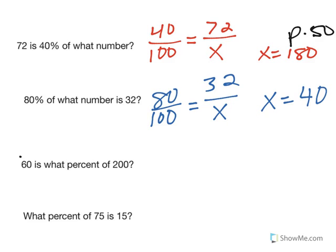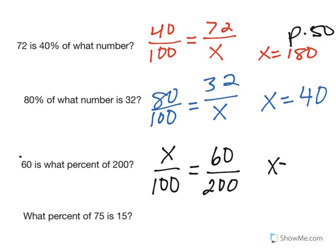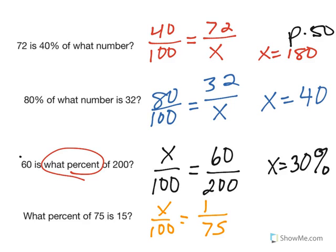And the third one, 60 is what percent of 200? So x over 100 equals 60 over 200. You'll also notice I always put my percents on the left. When I cross multiply here, I get x equals 30. But it's not just a number, right? Remember, we are trying to find the percent. So our answer should be 30%. And yes, it does matter. And in the last one, what percent of 75 is 15? So x over 100, 15 goes on the top. Cross multiply, x is 20. And once again, we're finding a percent, so you need to use the percent.